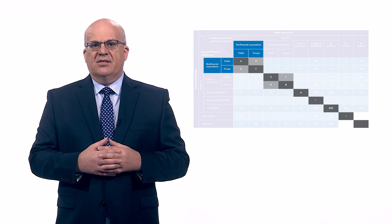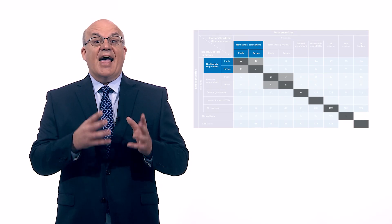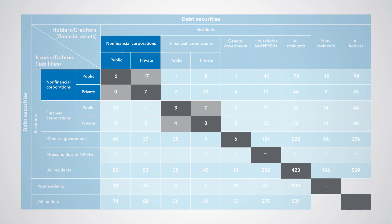Intra-sectoral stock positions of resident sectors in debt securities are shown in the diagonal dark shaded cells. For instance, non-financial corporations issued debt securities of 30 (that is 6 plus 17 plus 0 plus 7) to other institutional units in the same sector. These intra-sectoral transactions and stock positions are not counted when the statistics are presented on a consolidated basis.